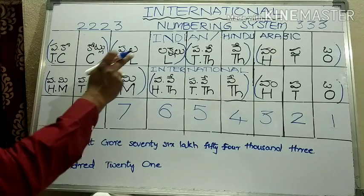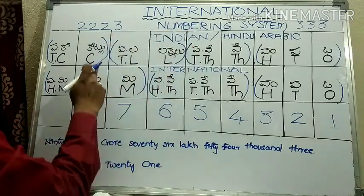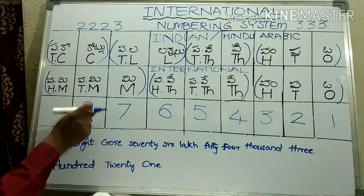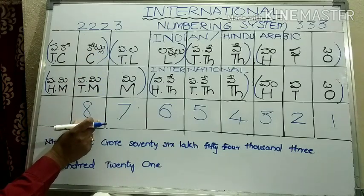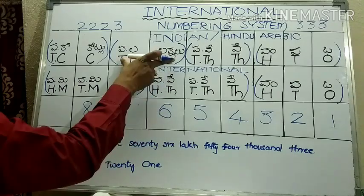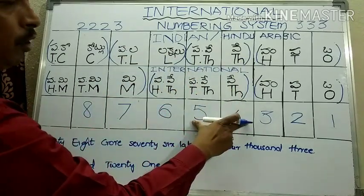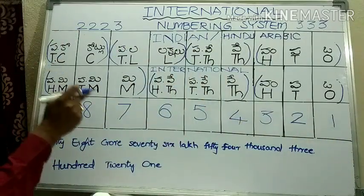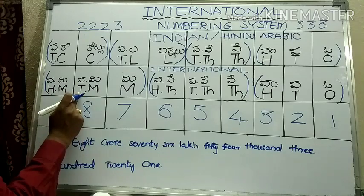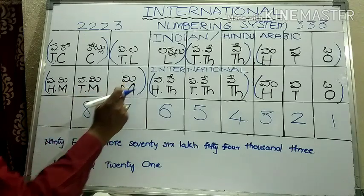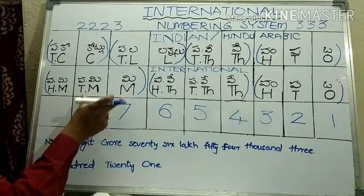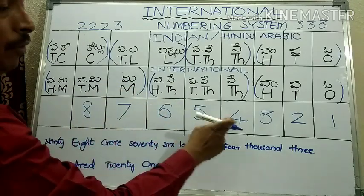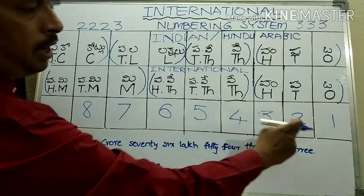I increase by another digit. In the Indian system, this new digit is in the crores place. So we read: 8 crores, 76 lakhs, 54,321. In the international system, 8 is in the ten-millions place and 7 is in the millions place — so 87 millions, 654,321.